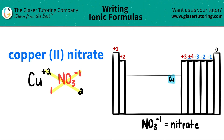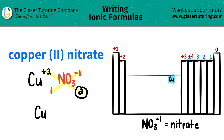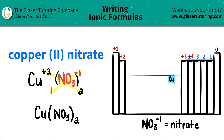Now we're ready to write our formula. I have copper, Cu. I only have one of them, so I don't have to write a subscript of one. But I have two nitrates — more than one polyatomic. If you have multiple polyatomics, you need to put the whole polyatomic in parentheses. So I put parentheses, NO₃, close the parentheses, and now I say how many I need: two. So copper two nitrate is Cu(NO₃)₂. And that's it.